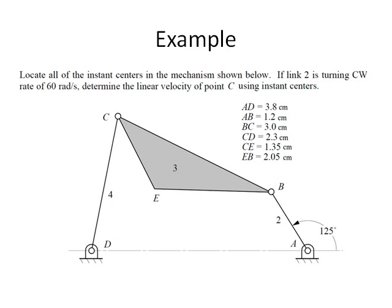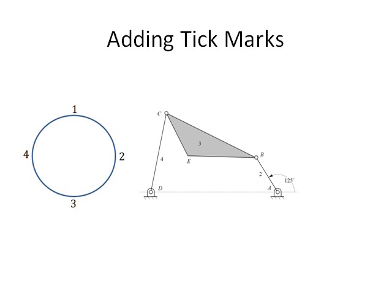Since we are using the graphical method, we will draw the linkage to scale. Now we look at the linkage to see how many links there are. In this linkage there are 4 links. Links 2, 3 and 4 are labeled in the picture. Link 1 is the base link or frame which connects the supporting pin at D and A. Now we will draw a circle of arbitrary radius. We can place 4 tick marks at approximately equal locations around the circle, one for each link.